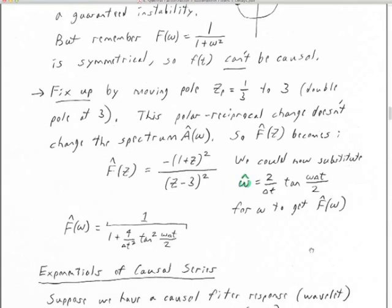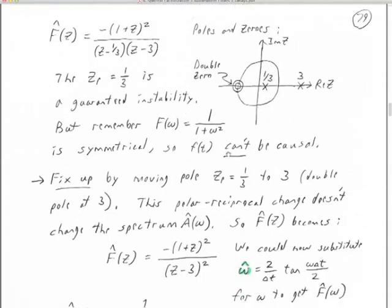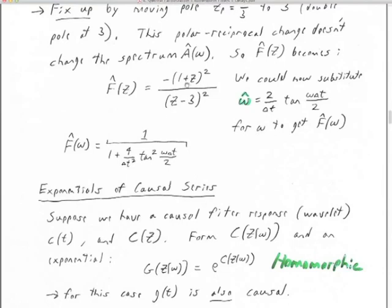Take E to some X — here's the Taylor series: 1 plus X plus X squared over 2 plus X to the third over 6, and so on — X to the nth power over N factorial. To form G of Z equals E to the power of C of Z, we get: 1 plus C of Z plus C squared of Z over 2 plus C to the third power of Z over 6 — it's C to the nth power of Z divided by N factorial. Because there's no way to get a negative power of Z in any of these terms, this shows that the exponential is guaranteed to be causal — a little illustration of keeping causality through this homomorphic transform.